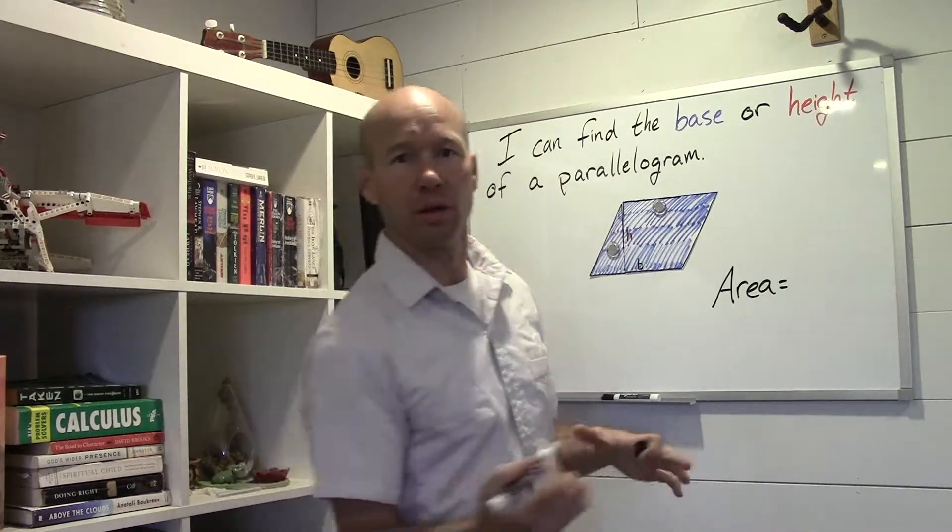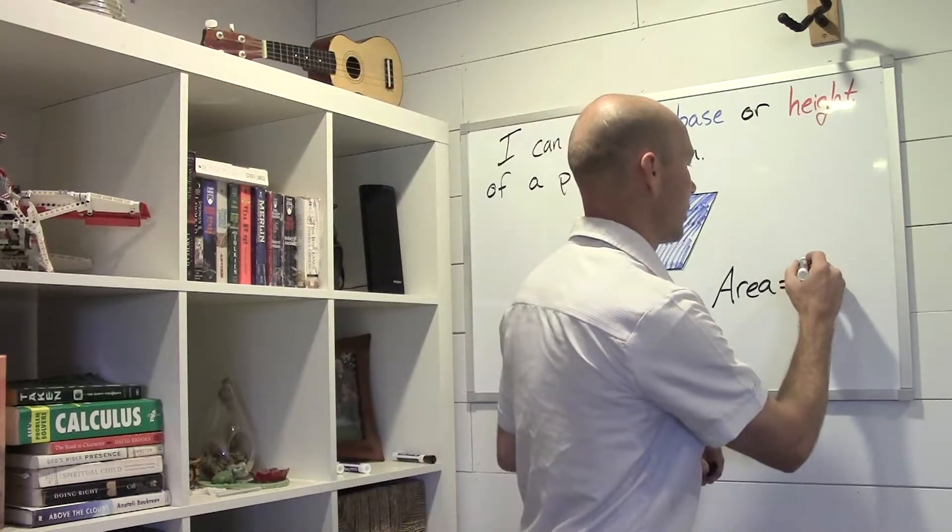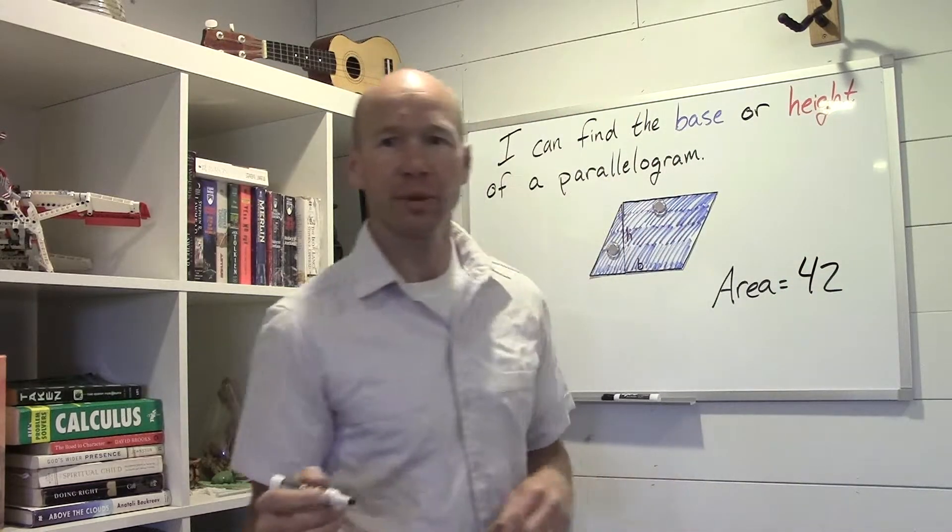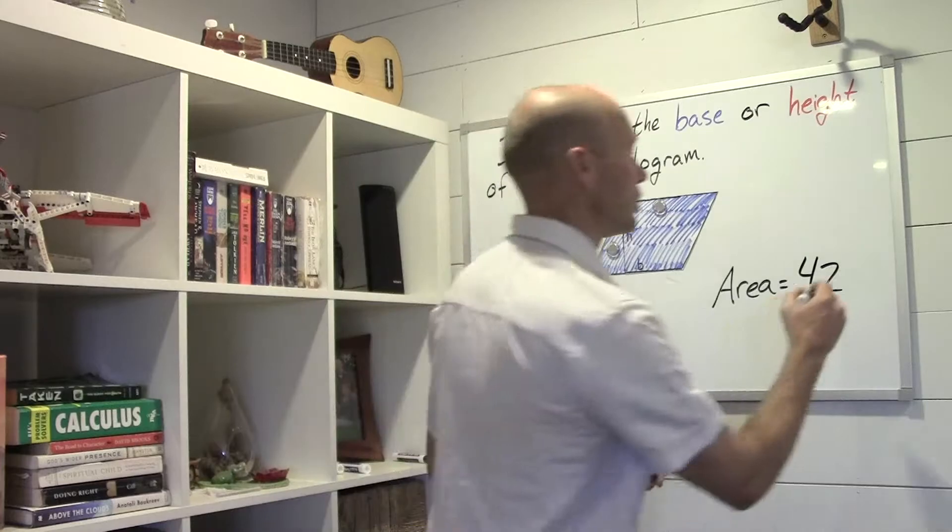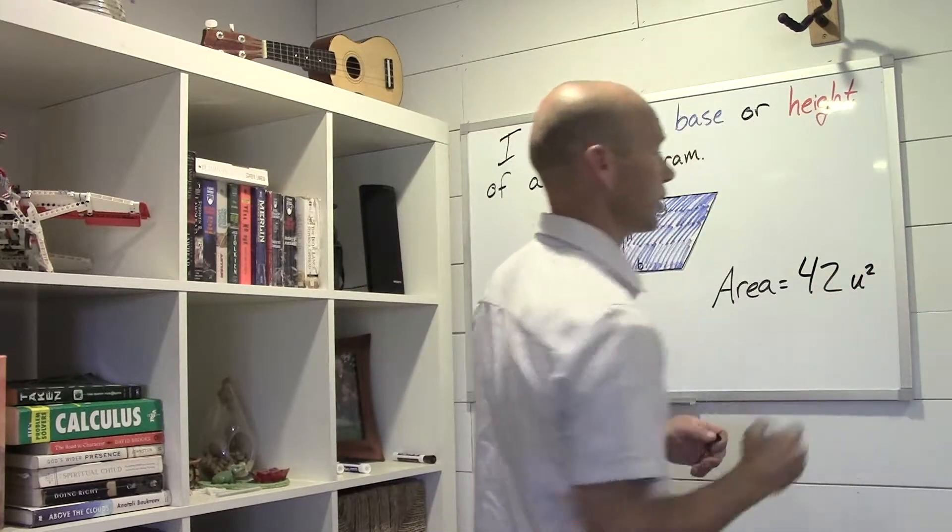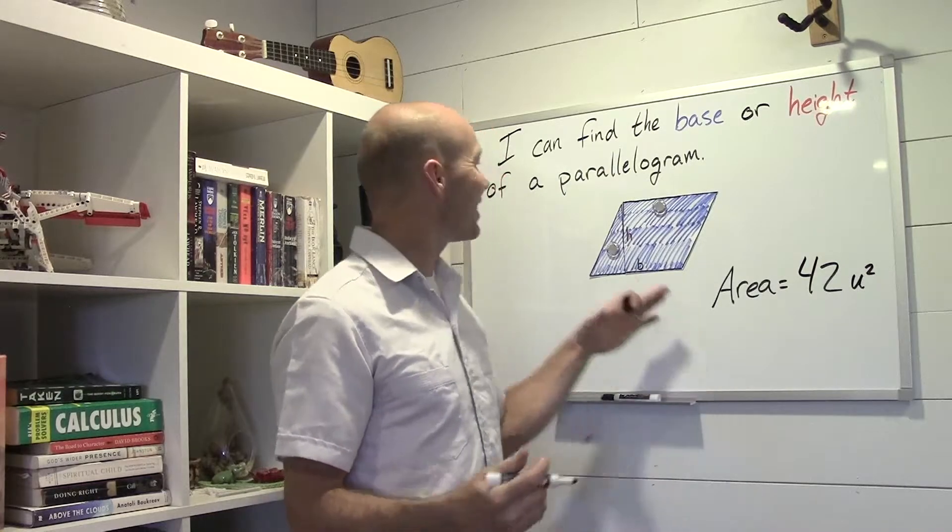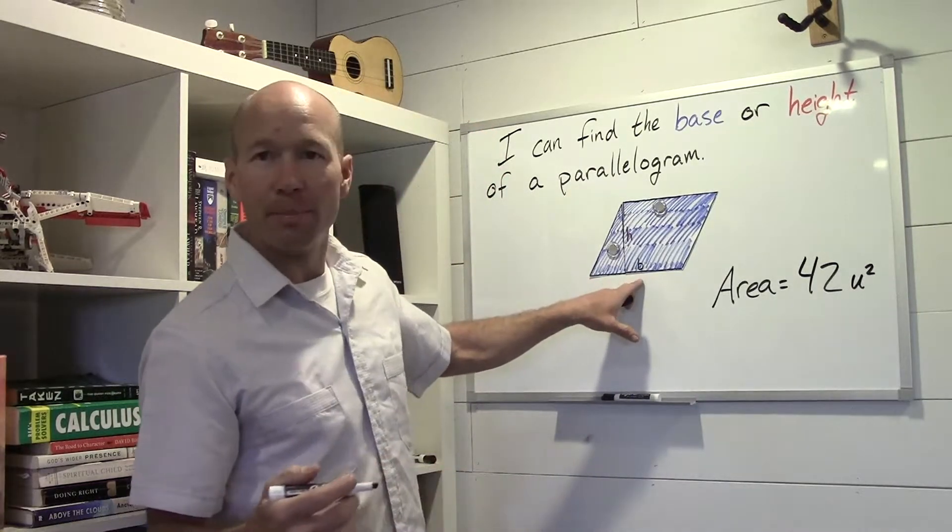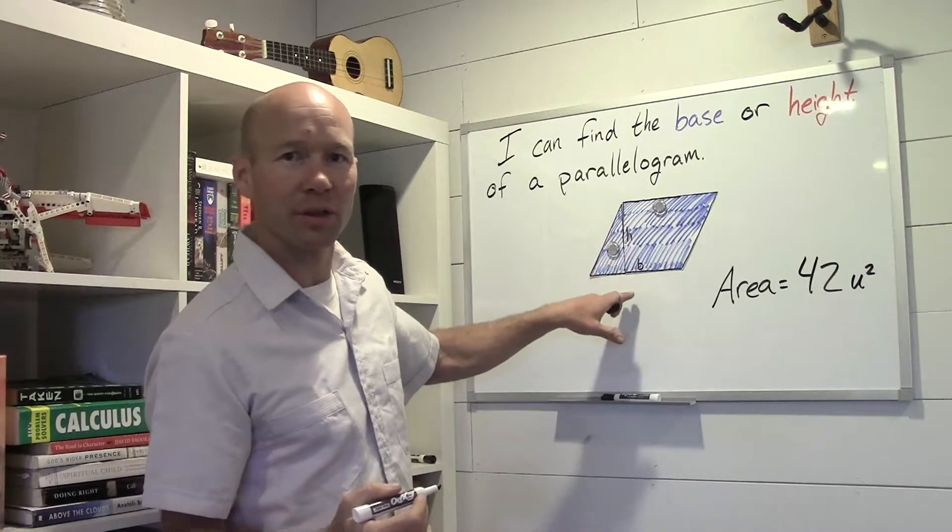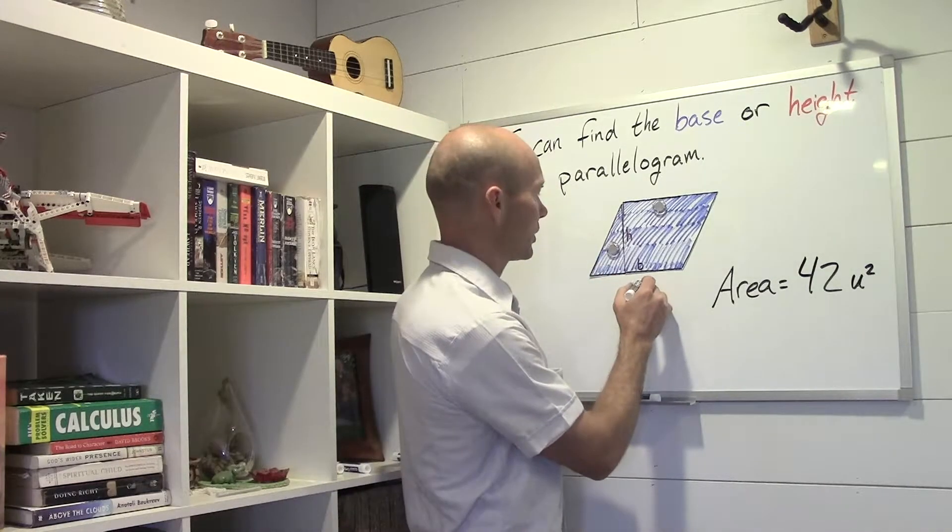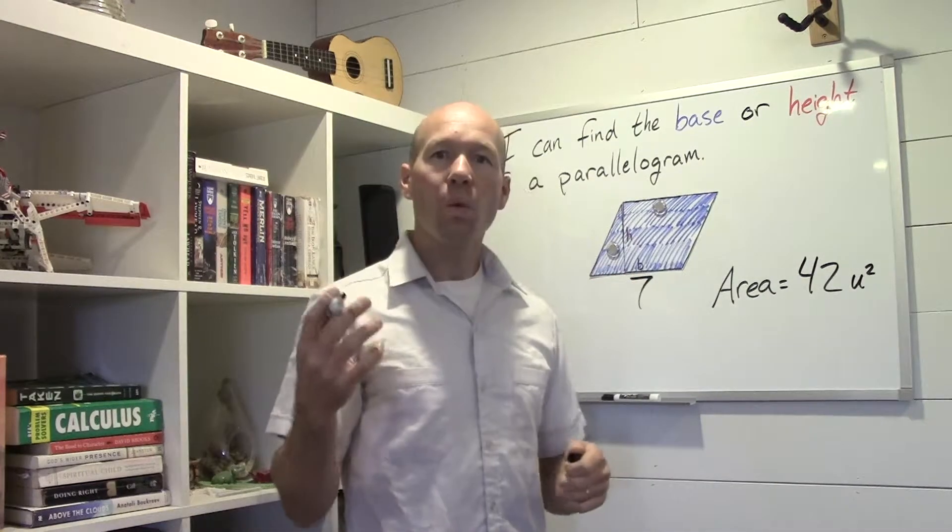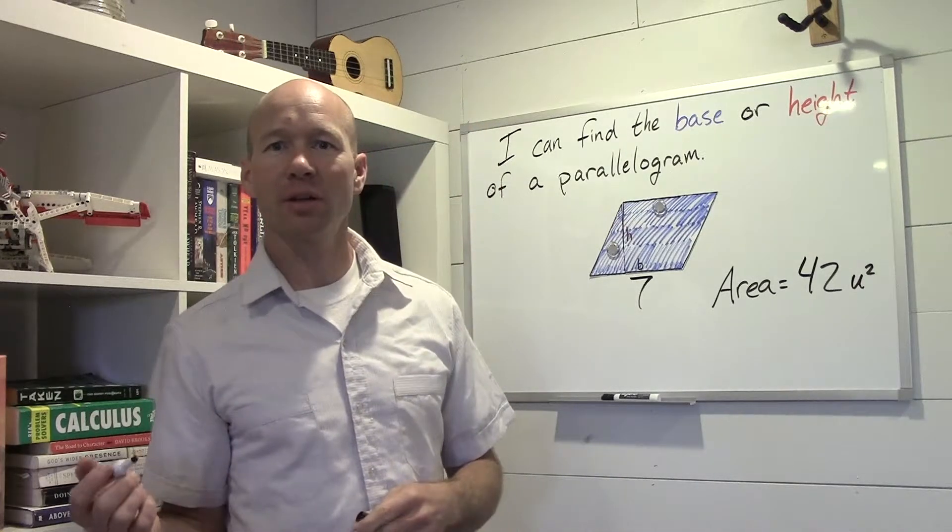Area equals 42. My area is 42 units squared, so my units are square units. And I know that the base, the bottom of this parallelogram, is say seven units. What is the height of my parallelogram?